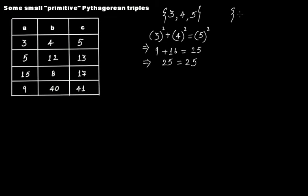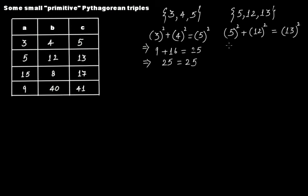Similarly, if you check this one: 5, 12, 13. Then 5 squared plus 12 squared should equal 13 squared for these to be Pythagorean triples. So 25 plus 144 should equal 169 — and 169 equals 169. Yes, the condition gets satisfied. You can check the remaining sets in the same way.